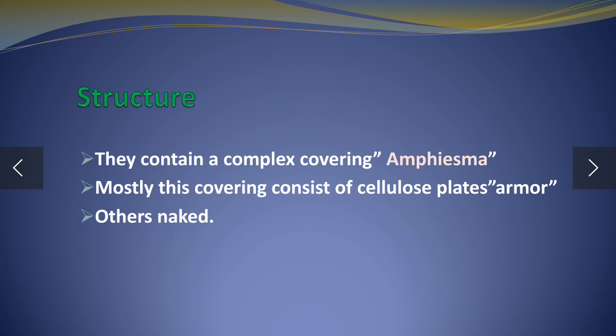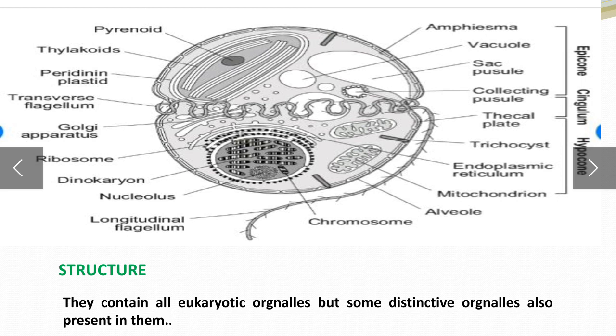Regarding structure, they contain a complex covering. Some have an outer shell or covering and some are naked — they don't have an outer covering or shell. You can see the diagram. They contain organelles including Golgi apparatus, ribosomes, nucleolus, chromosomes, and vacuoles. They contain all eukaryotic organelles, but some distinctive and unique organelles are also present in them.